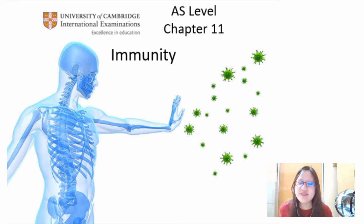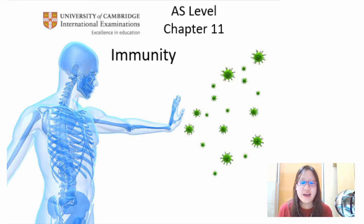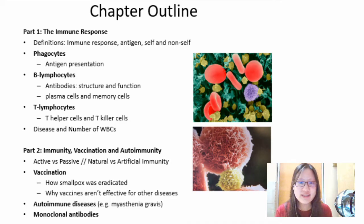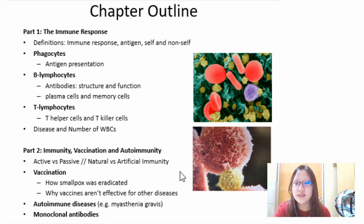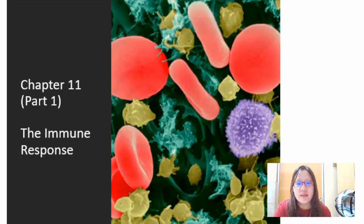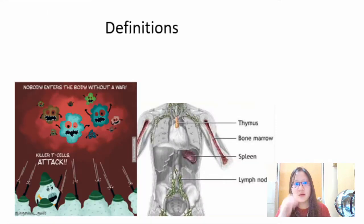Hi everyone and welcome to Chapter 11: Immunity. In this chapter we have two parts. Part 1 is the immune response, where we talk about phagocytes and lymphocytes in more detail. Part 2 covers immunity, vaccination, autoimmunity, and also a little bit about antibodies.